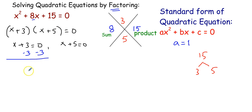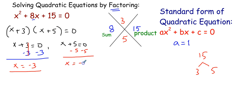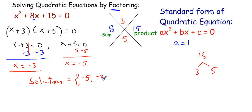Solving each: subtracting 3 from both sides gives x = -3, and subtracting 5 from both sides gives x = -5. So the solution set is {-5, -3} — we write the smaller number first. These are the two roots, or zeros, of this quadratic equation.